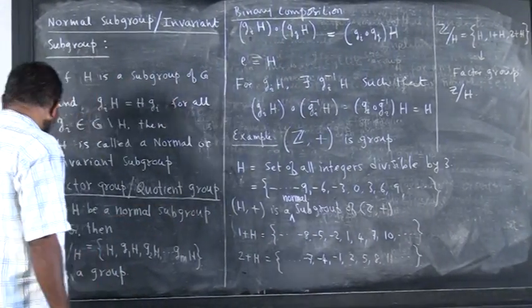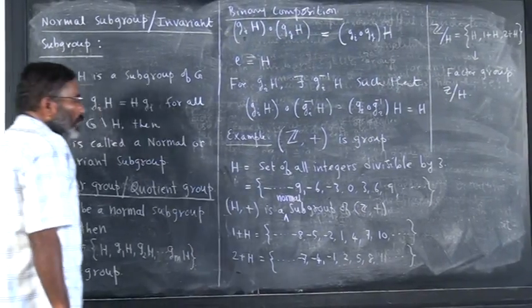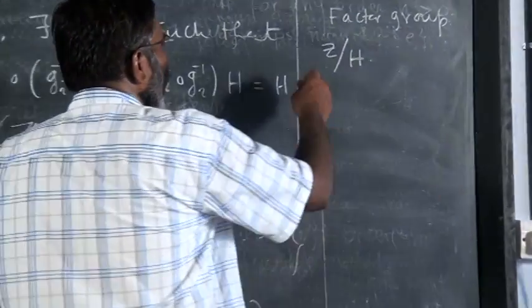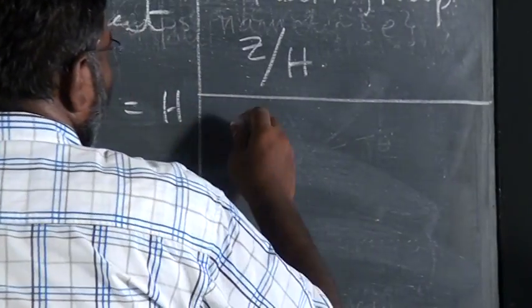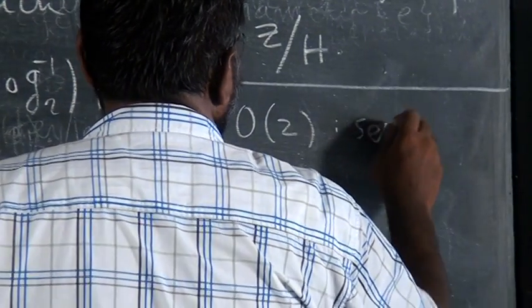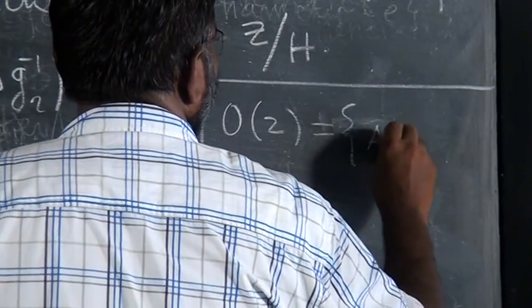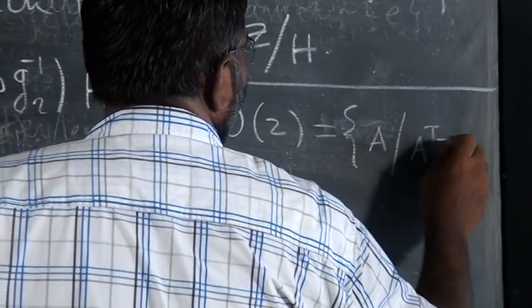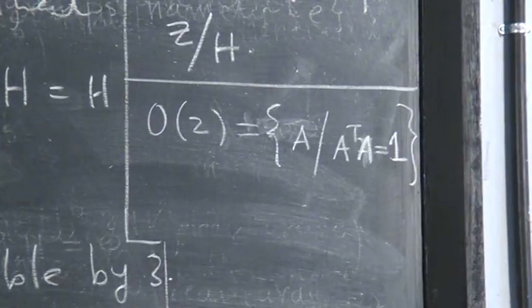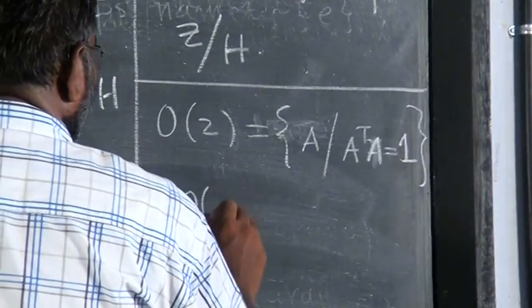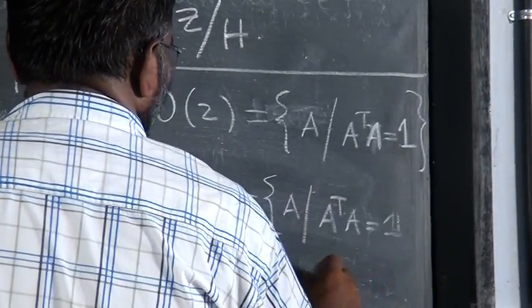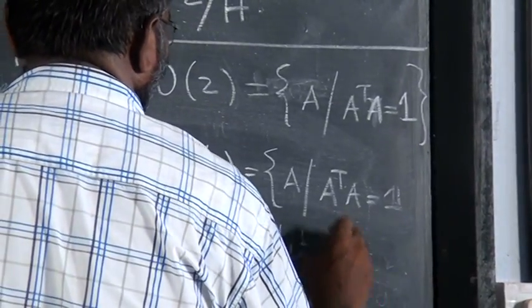Let me also give you another example. We have O2, the set of all orthogonal matrices. O2 is defined as A such that A transpose A is equal to identity, and an additional condition: determinant of A is equal to plus 1.